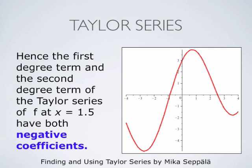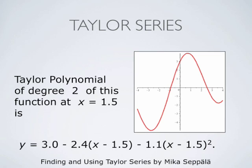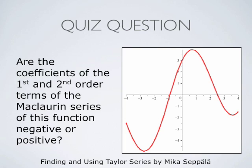We conclude that the first and second degree terms of the Taylor series centered at x equals 1.5 both have negative coefficients. For this particular function, the Taylor polynomial of degree 2 is approximately 3.0 minus 2.4 times (x minus 1.5) minus 1.1 times (x minus 1.5) squared, confirming that the first and second order terms have negative coefficients. A related quiz question: are the coefficients of the first and second order terms of the Maclaurin series of this function negative or positive? I will return to that at the end of this video.